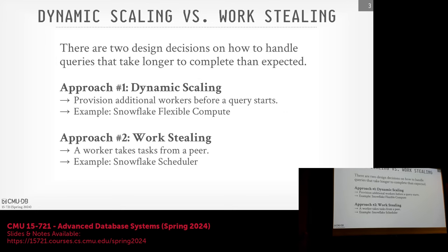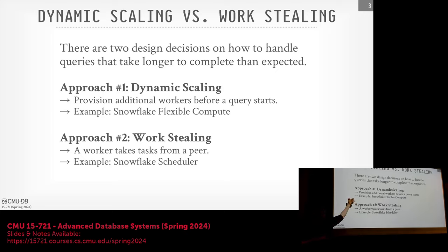The one thing we ran out of time for that I want to briefly discuss — because this is going to come up when we talk about real-world implementations — is the notion between dynamic scaling and work stealing, a way to allow the system to rebalance itself and improve performance rather than getting stuck behind stragglers. These are not mutually exclusive; Snowflake is listed on both. If it's a cloud-based system, you can do dynamic scaling because you have additional resources.